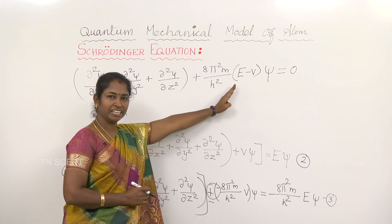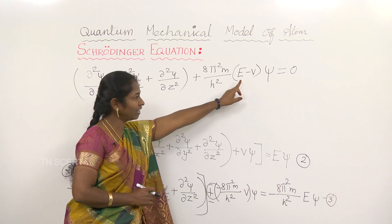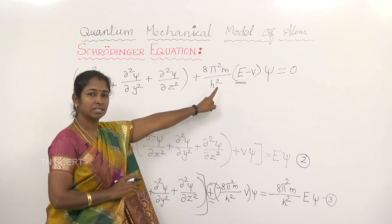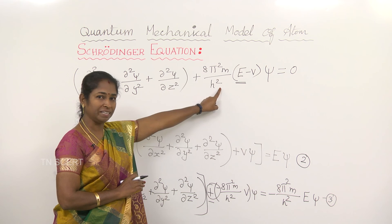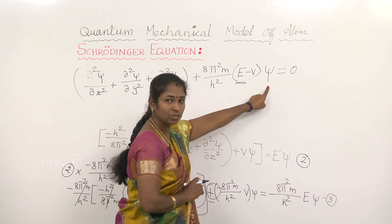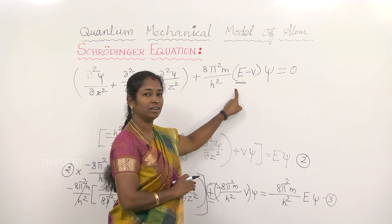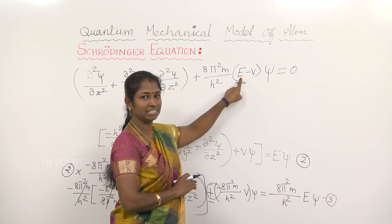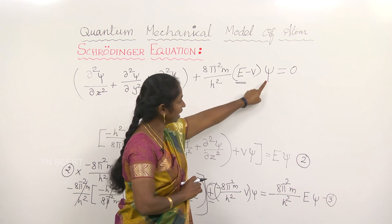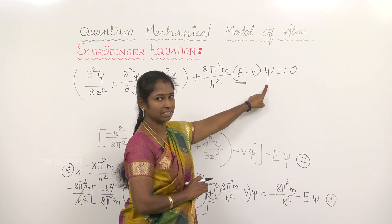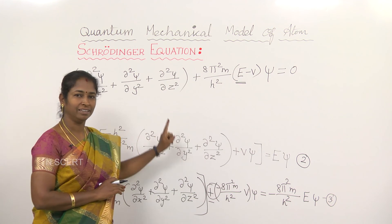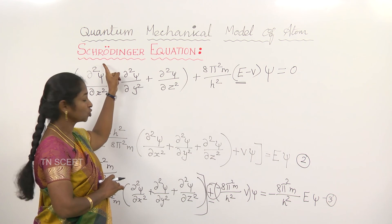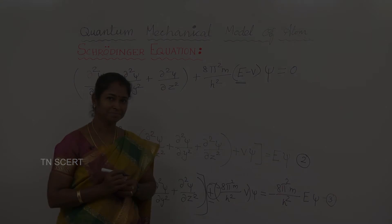This equation can be solved only for certain values of E. Those values represent the atomic orbits — the permitted energy levels. The corresponding ψ values represent atomic orbitals. So E gives the permitted energy levels or orbits, and ψ gives the atomic orbitals. By keeping all these things in mind, you can easily answer any question related to the Schrödinger equation.